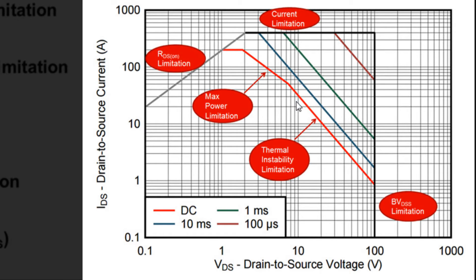The fourth limitation is the thermal instability limitation, and this is where it becomes very important to actually measure the capability of the device. The power limitation can be calculated, but the thermal instability region really cannot be predicted in any sound way — you actually have to test devices in this region to see where they fail. If we extended the maximum power line all the way down, we would see failures well below what was advertised, or if we were too conservative, we'd overcompensate. This thermal instability region cannot be calculated — it must be measured.